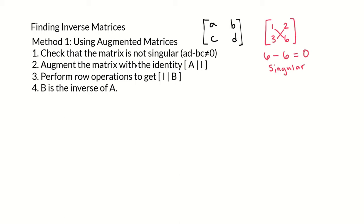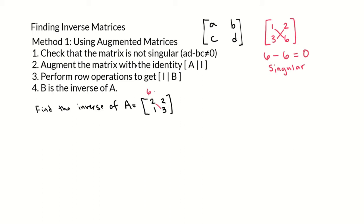So let's do an example of a matrix that does have an inverse. Find the inverse of the matrix A which is 2, 2, 1, 3. First we'll check that this matrix is not singular, so multiply and subtract the diagonals: AD minus BC. AD is 2 times 3 which is 6, minus 2 times 1 which is 2, equals 4. Since 4 is not 0, this matrix is not singular, which means we can find the inverse.